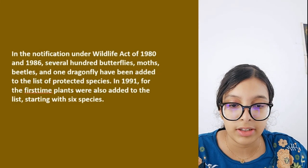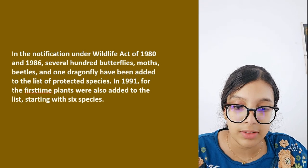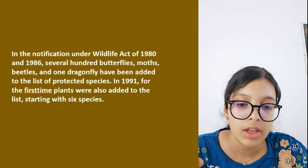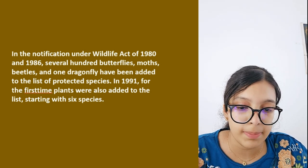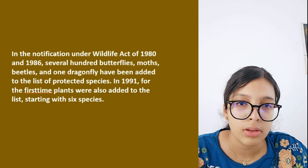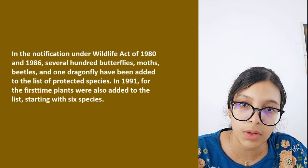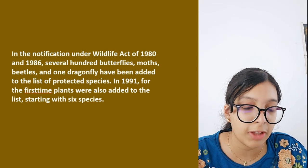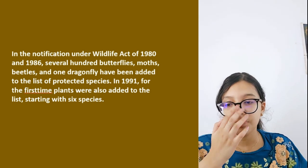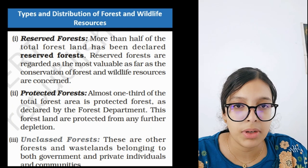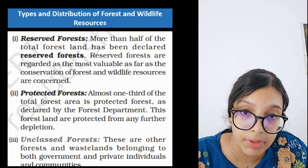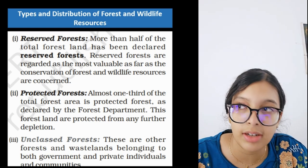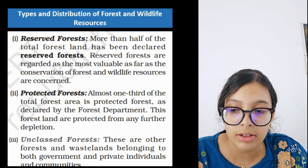In amendments to the Wildlife Act in 1980 and 1986, several hundred butterflies, moths, beetles, and one dragonfly were added to the list of protected species. In 1991, for the first time, plants were also added to the list, starting with six species. So insects and then plants were progressively included in the conservation framework beyond just animals.